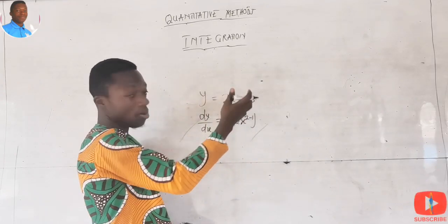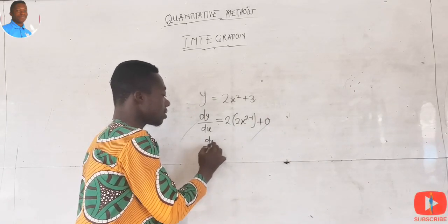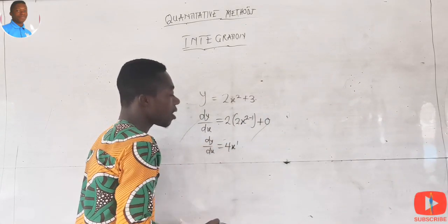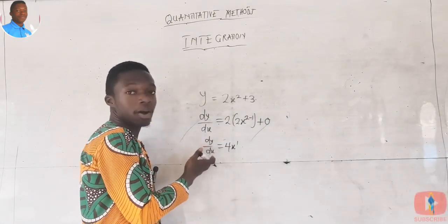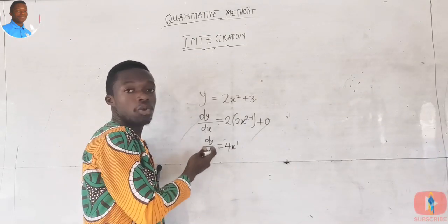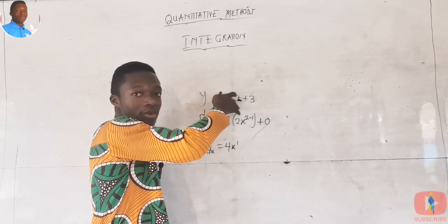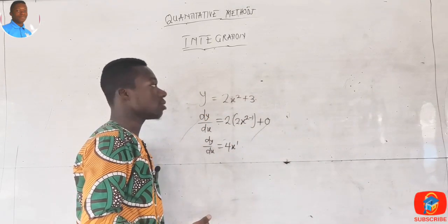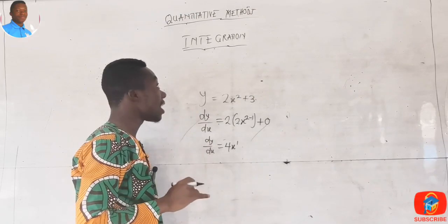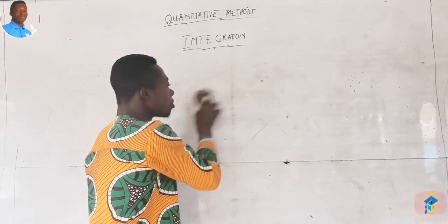That gives us 2 × 2 = 4, with x to the power of 2 − 1. The differential of 3, a constant, is zero. So dy/dx = 4x. This is what we talk about with differentiation. When it comes to integration, we want to reverse this derivative back to the original function — that is what we mean by integration.